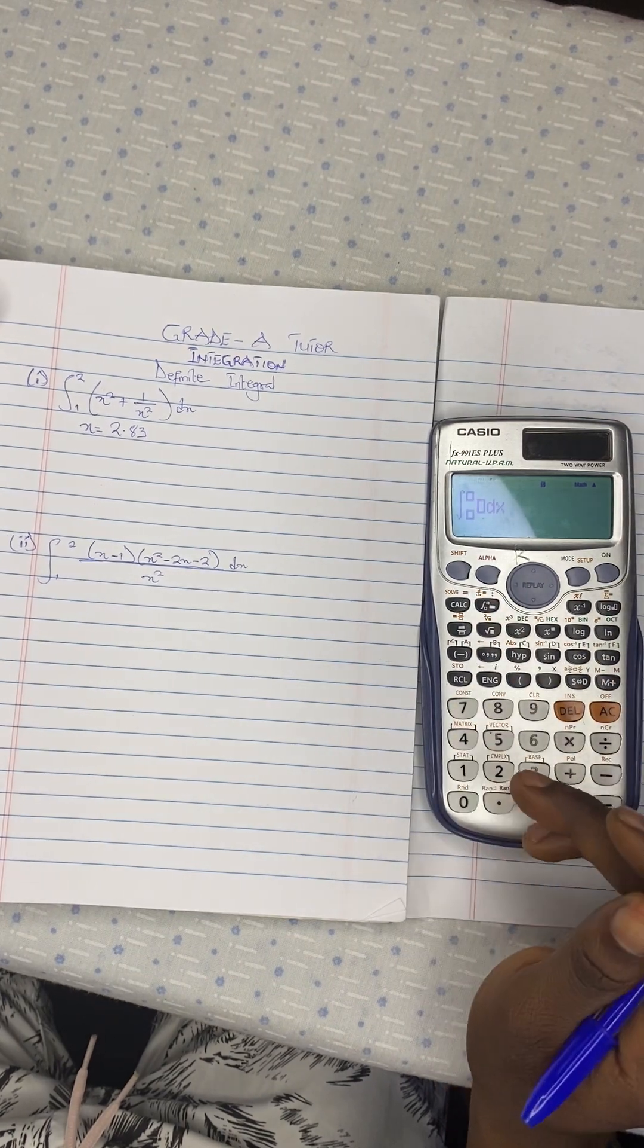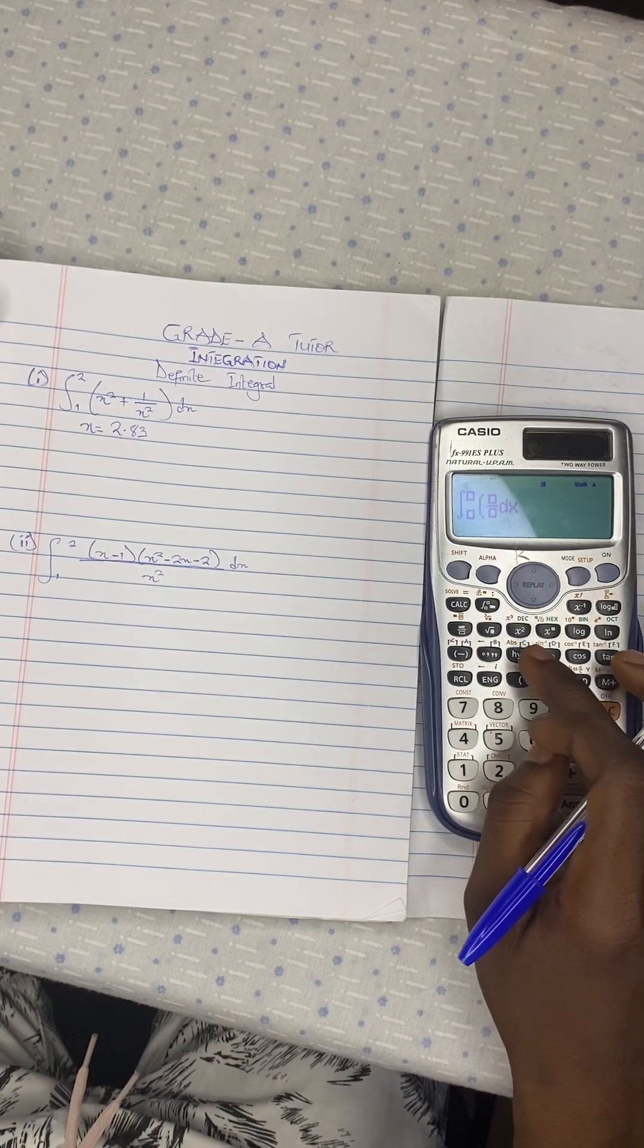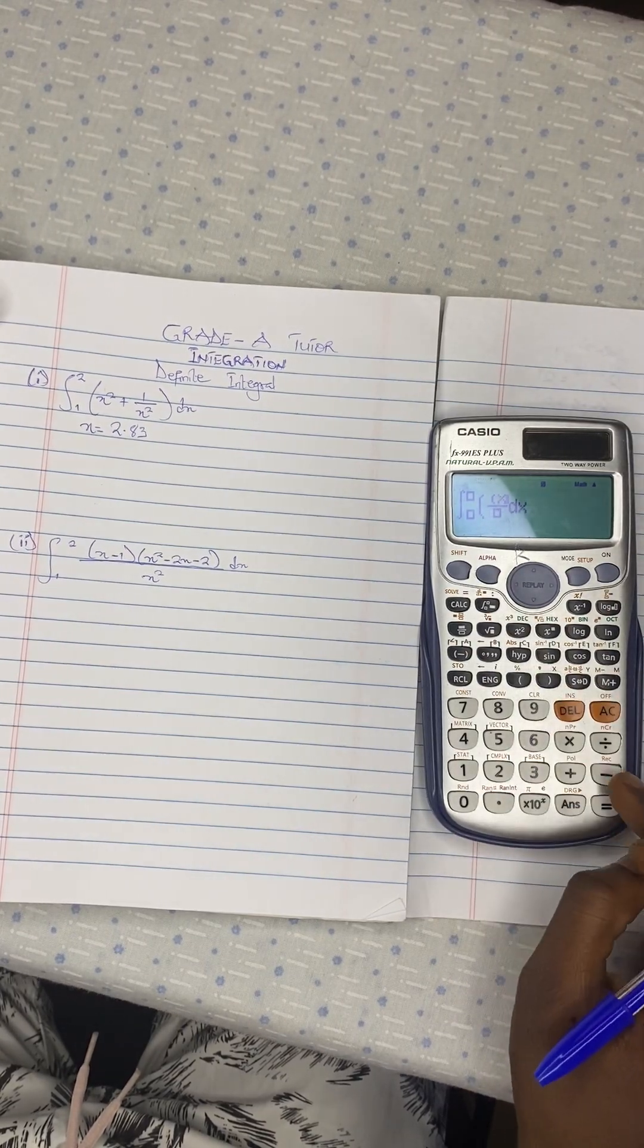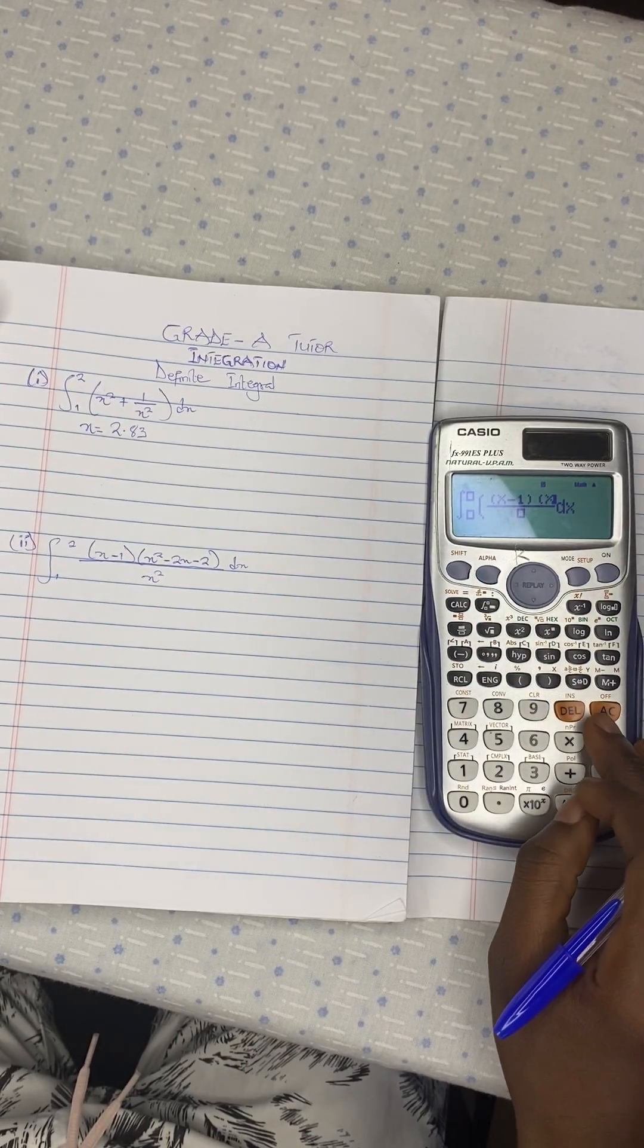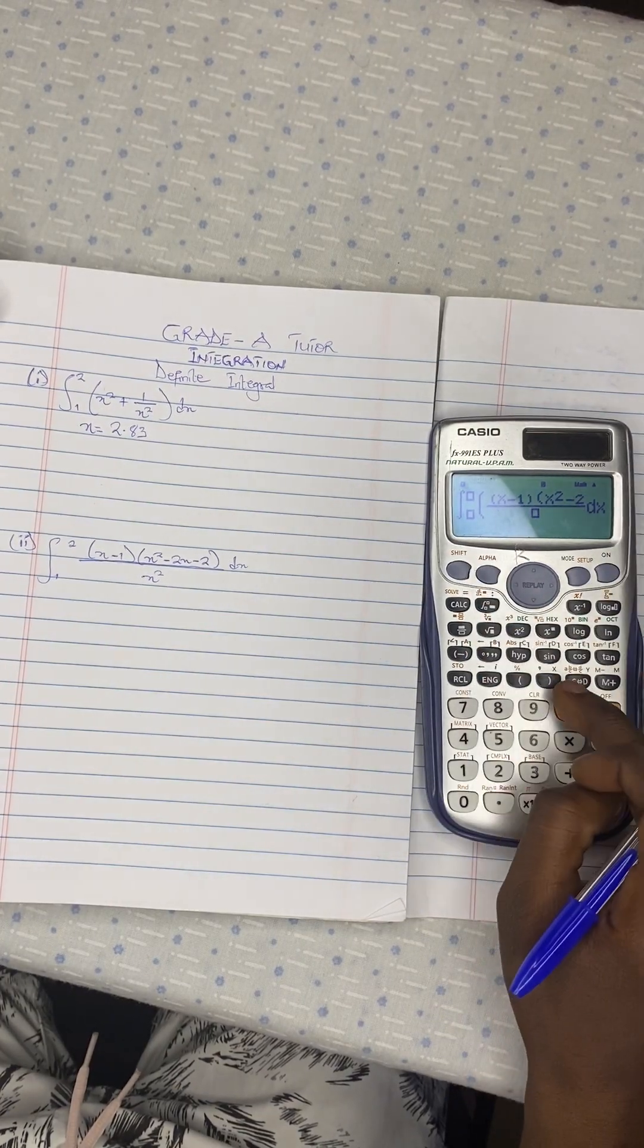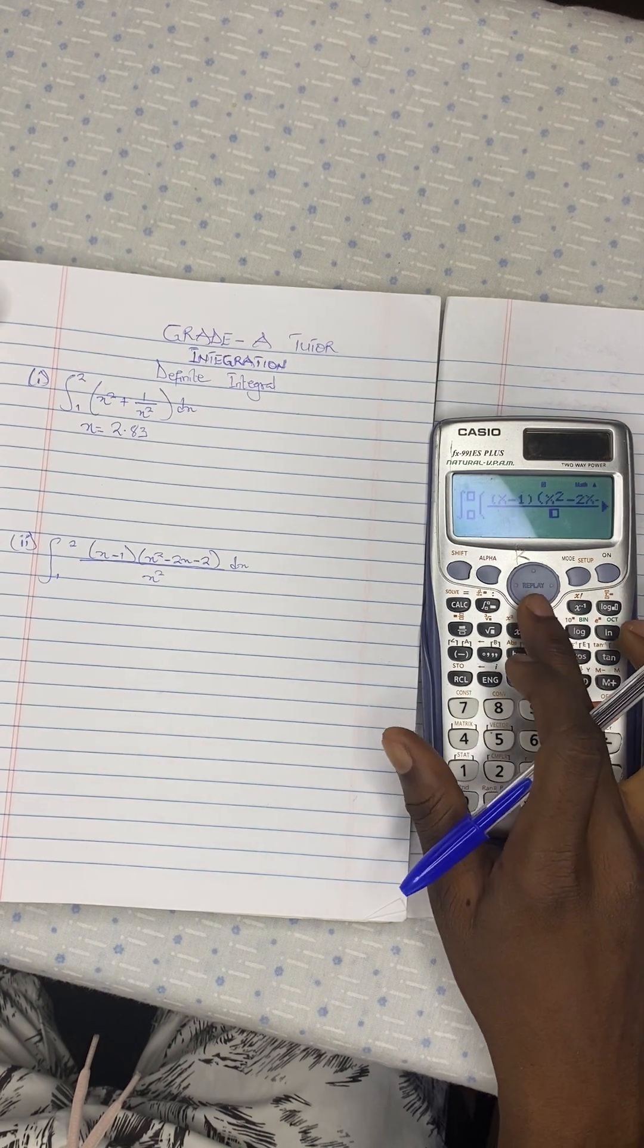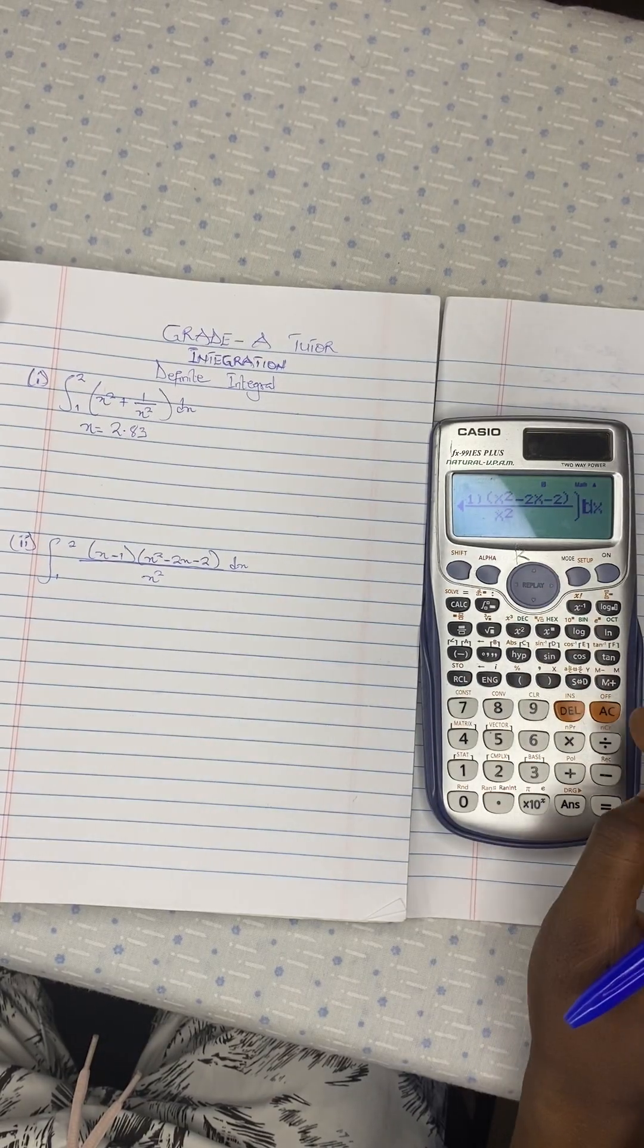So you press on the same key again. Your function, you open brackets, you divide, and there is x minus one, bracket closed, another brackets, x squared minus two x minus two, you close your brackets, divided by x squared. Then you close the whole brackets.